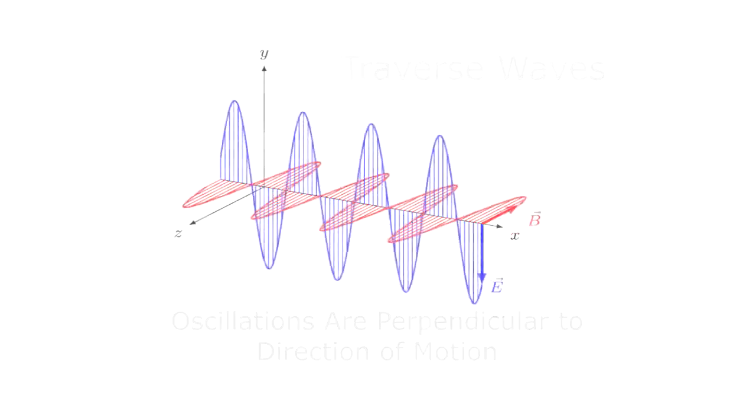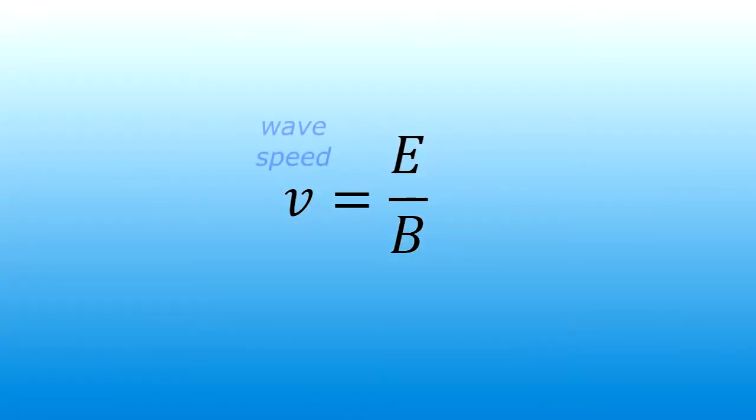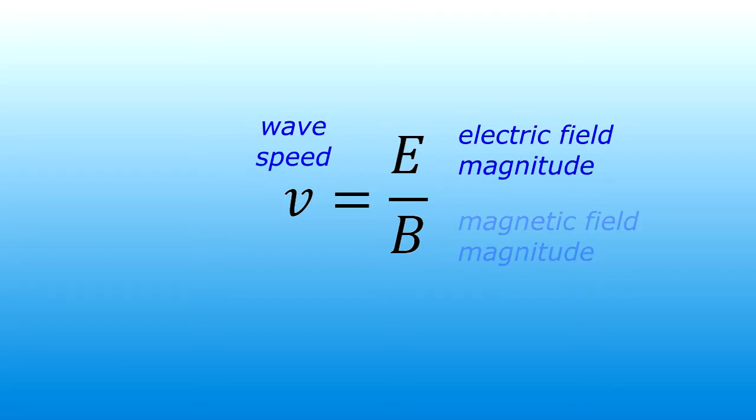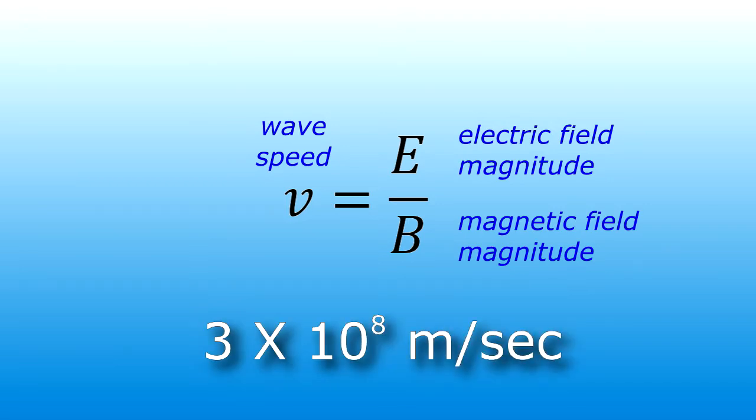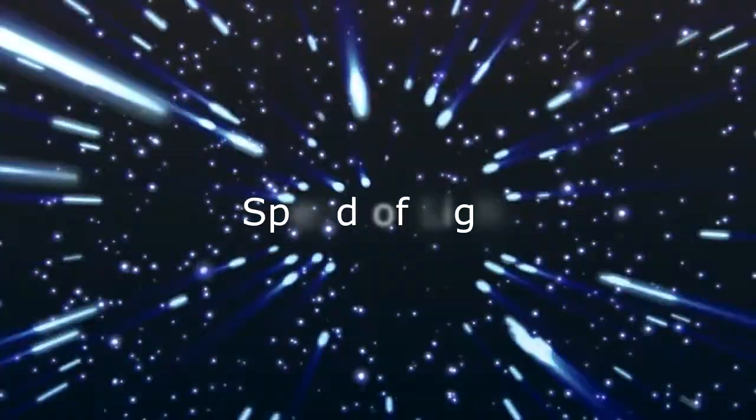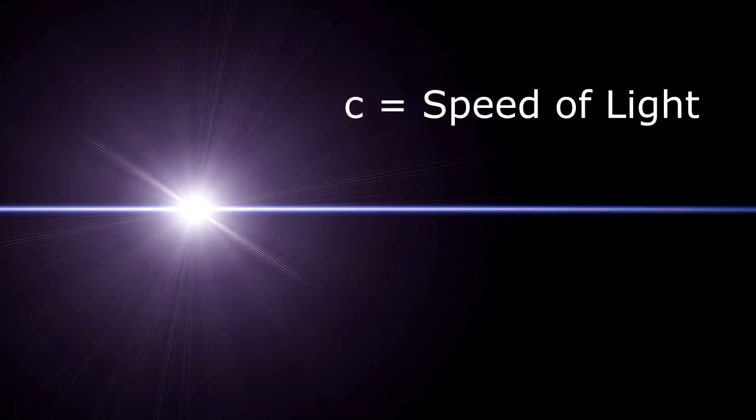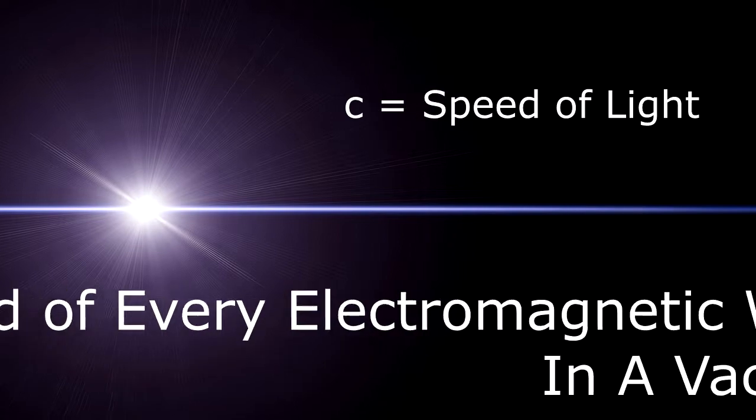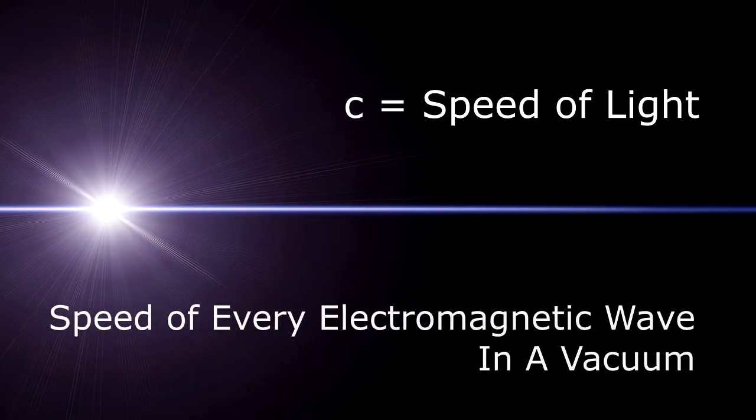So how fast are these electromagnetic waves moving? Maxwell calculated that the speed of each wave is equal to the electric field's magnitude divided by the magnetic field's magnitude. And this speed works out to be 3 times 10 to the 8 meters per second. We call this the speed of light, and we denote that with the small letter c. And it's actually the speed of every electromagnetic wave in a vacuum, and pretty much in air as well.